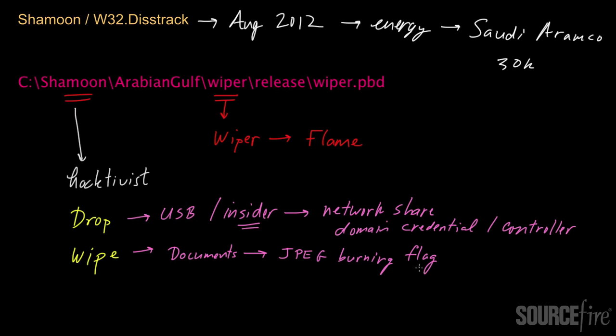Once the initial wipe was carried out, the next aspect of the wipe functionality was to delete the master boot record, or MBR. The master boot record is the first sector on the hard drive of a computer — it tells the computer how the hard drive is partitioned and how to load the operating system. Without the master boot record, or if it's been corrupted, the computer becomes largely inoperable.